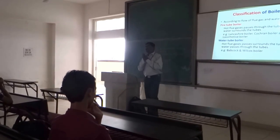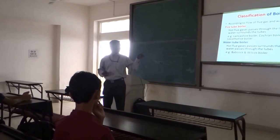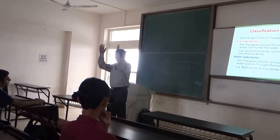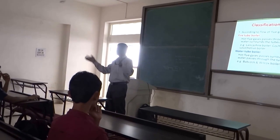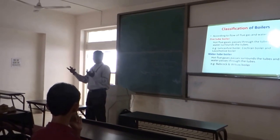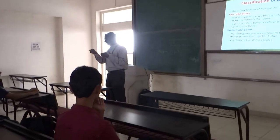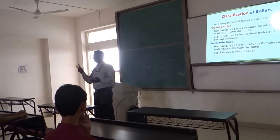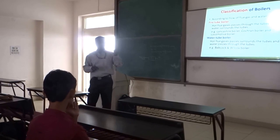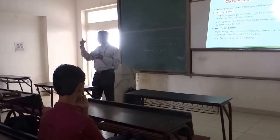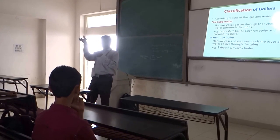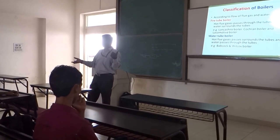Coming to the classification of boilers: the fundamental classification is fire tube boiler and water tube boiler. In a boiler you have tubes and a shell. In a fire tube boiler, flue gases pass through the tubes and the tubes are surrounded by water. In a water tube boiler, water is inside the tube and the tubes are surrounded by the flue gases — the products of combustion from the furnace.